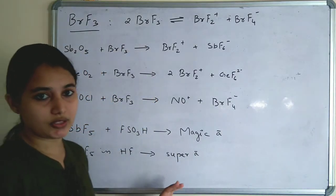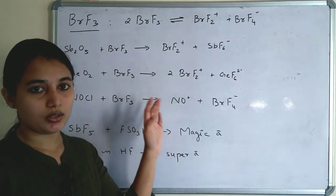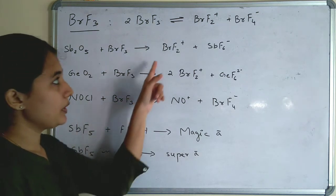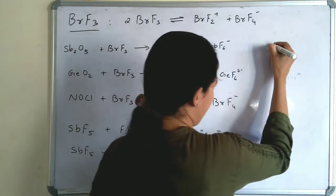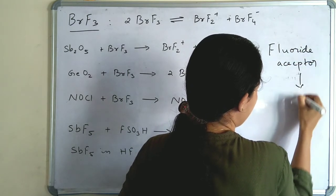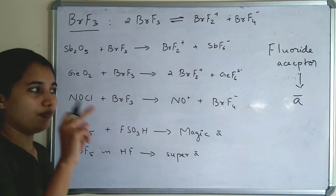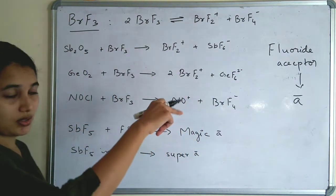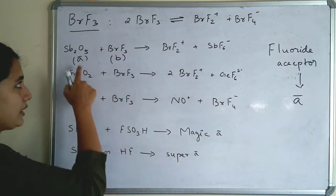The next non-aqueous solvent is BrF3. In BrF3, the auto-ionization gives BrF2⁺ and BrF4⁻. To determine acid and base in BrF3: the fluoride acceptor is the acid and the fluoride donor is the base. SbO5 + BrF3 → BrF2⁺ + SbF6⁻ — antimony accepts fluoride, so SbO5 is an acid and BrF3 is a base. GeO2 + BrF3 → 2BrF2⁺ + GeF6²⁻ — fluoride is accepted, so GeO2 acts as an acid.